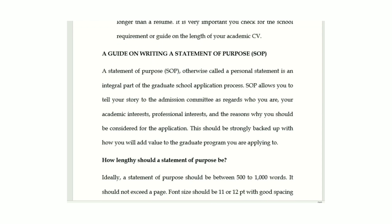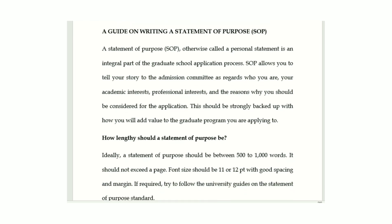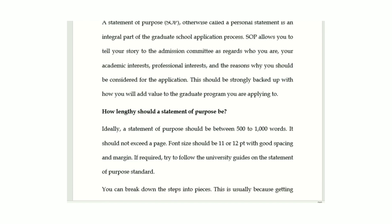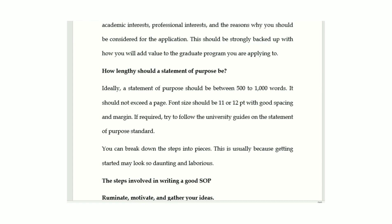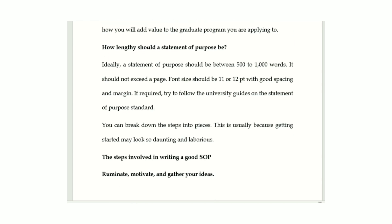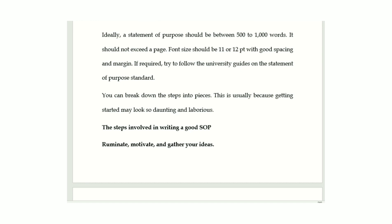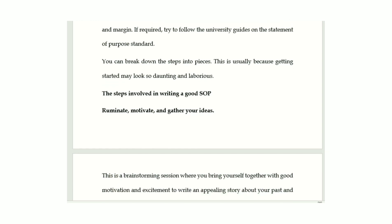A statement of purpose is an integral part of a graduate school application process. The SOP allows you to tell your story the best way you can to the admission committee, strongly backed by adding a lot of experience and personal things that are part of you, in line with your academic and research experience. The length of your statement of purpose can be from 500 to 1000 words — some schools will stipulate the number of words they want. Write it with a legible 12-point font, double spacing, good margins, and justify your text.